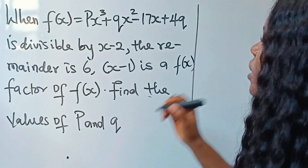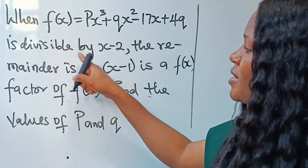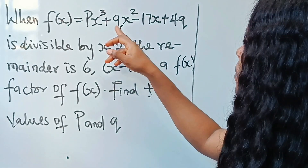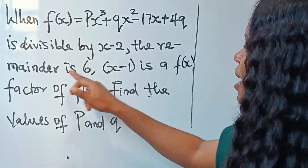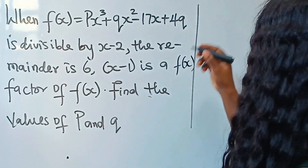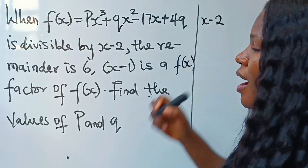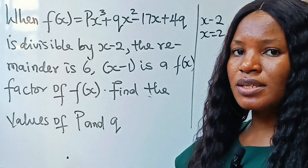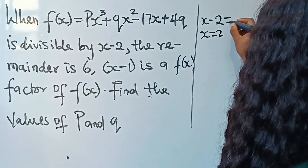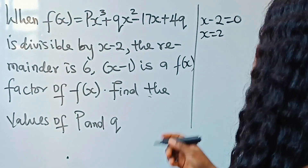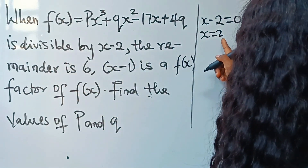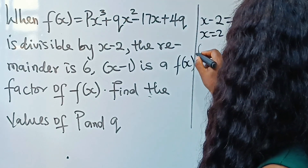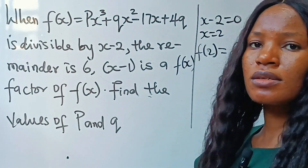Now let's analyze what we have on the board. We are told that f(x) is divisible by x minus two, and when it is divided the remainder is six. This means that our root is x equals two, and when we substitute two into this polynomial our remainder is six. That means f(2) equals six. This is equation one.